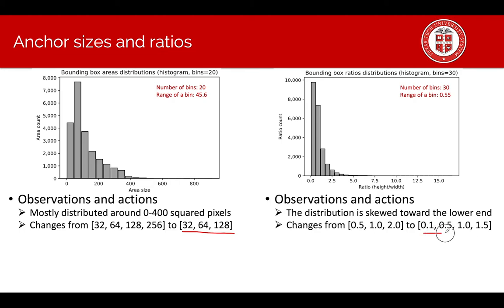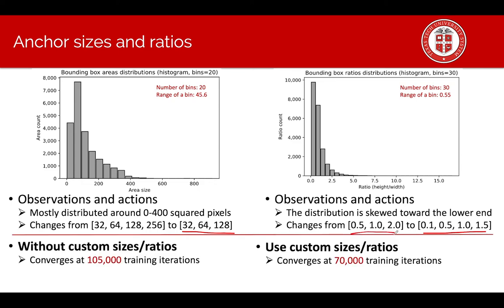Those are the height to width ratios and see that the distribution is skewed toward the lower end. Thus, we focus on the smaller ratios like 0.1, 0.5 instead of the default one. And the result is that it takes shorter training iterations because we provide appropriate anchor size and ratios.